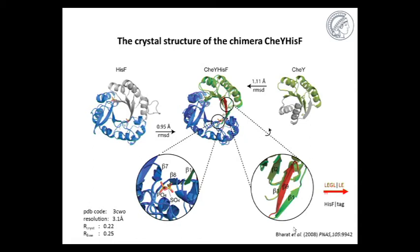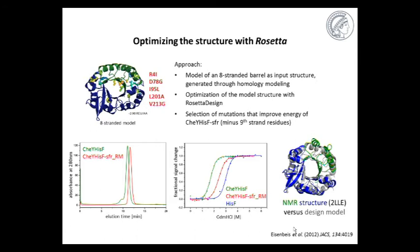So we were wondering whether the ninth strand is really absolutely crucial for the integrity of the fold, and so we cut off these residues and looked whether our protein would still be folding correctly. It was not. It actually tended to aggregate very much. And so we were wondering what we could do in order to optimize the structure to form a proper eight-stranded barrel.